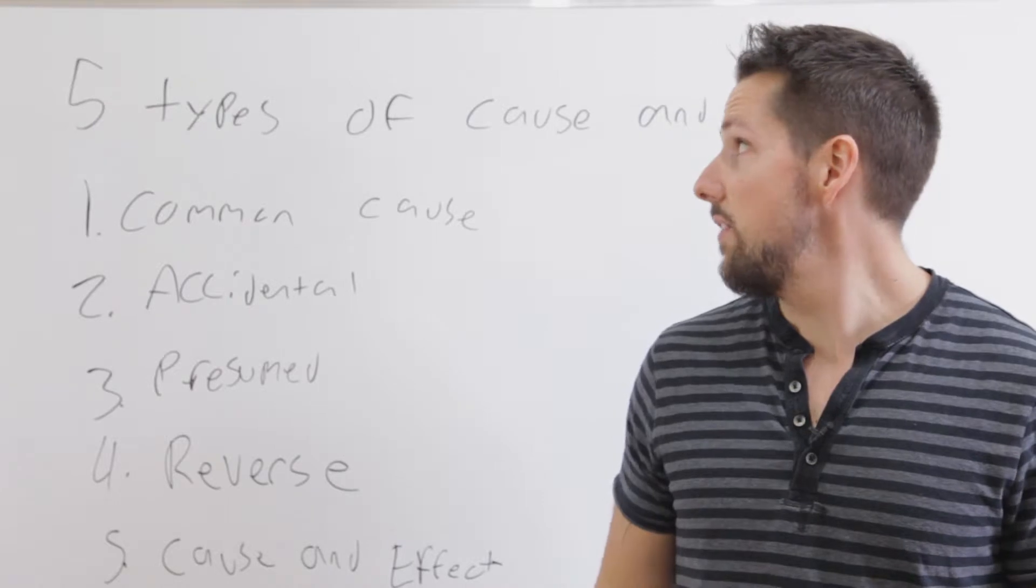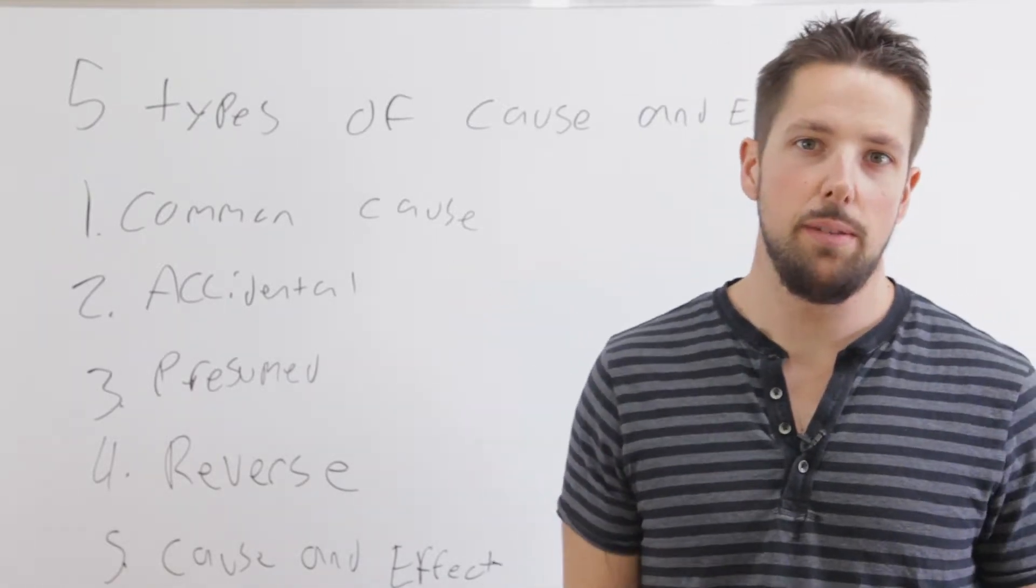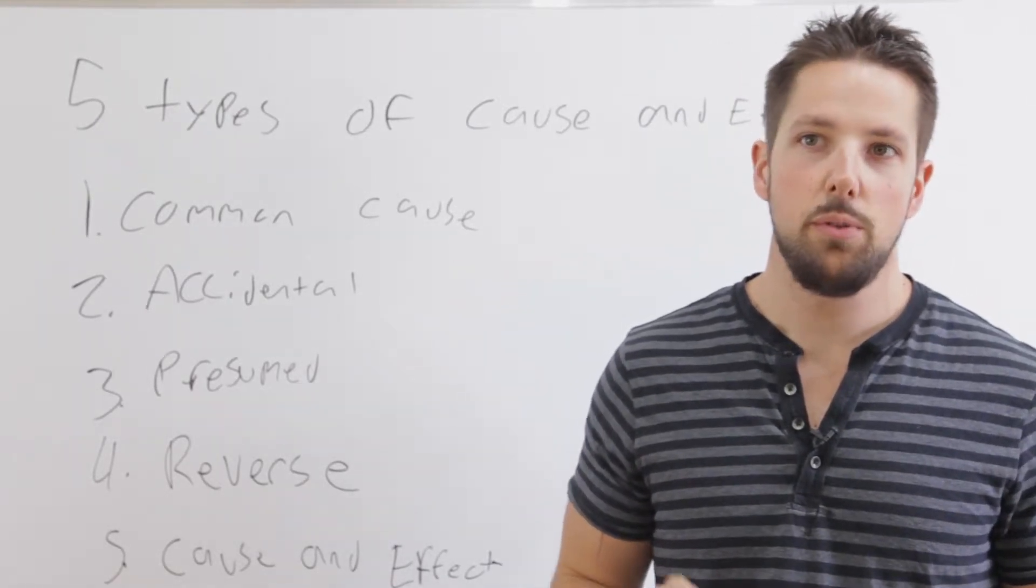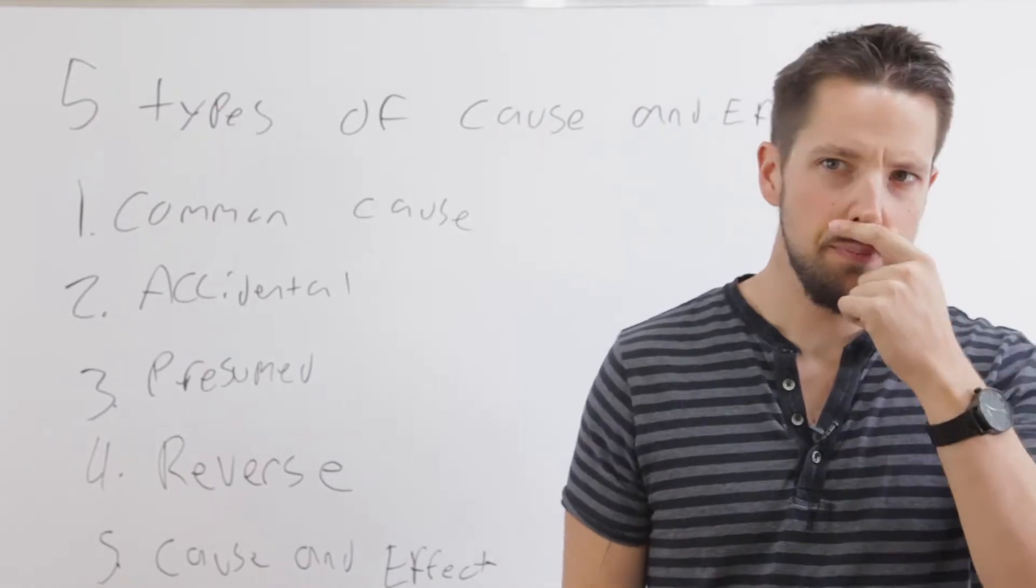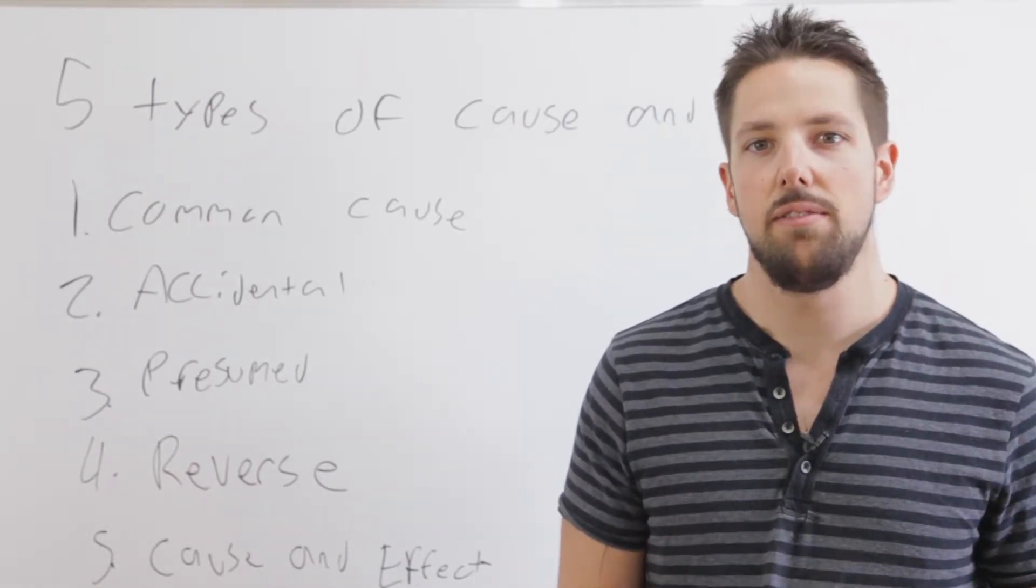Now we're into lesson two, the five types of cause and effect relationships. When you look at the relationship between independent and dependent variables, there's five different ways that you could assign a cause and effect.